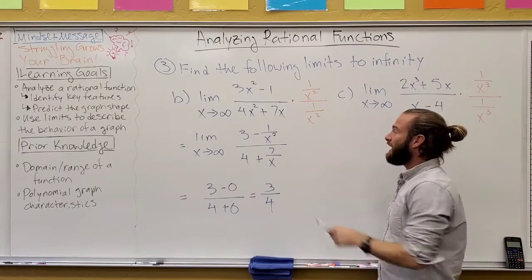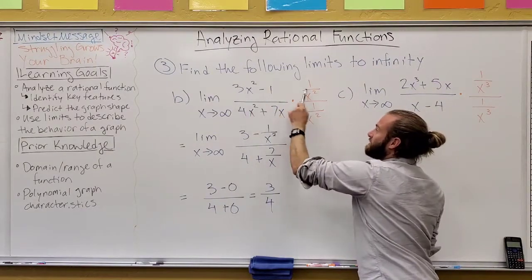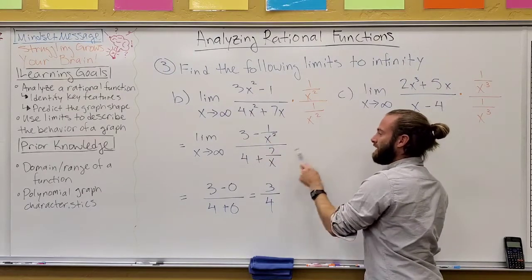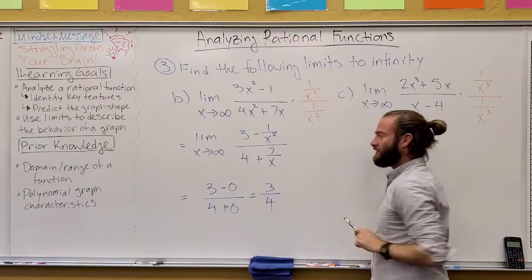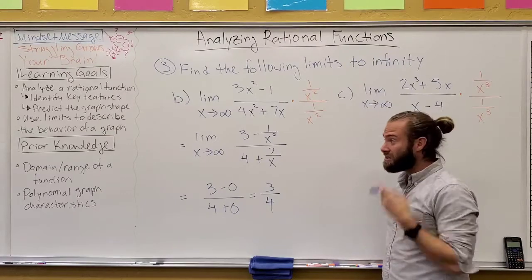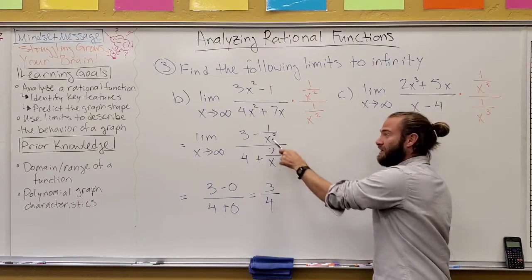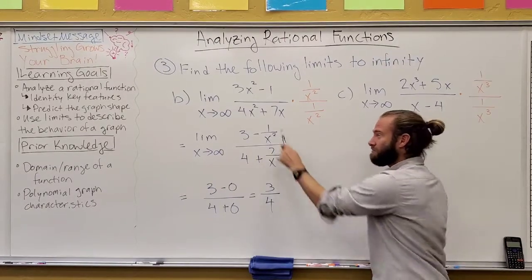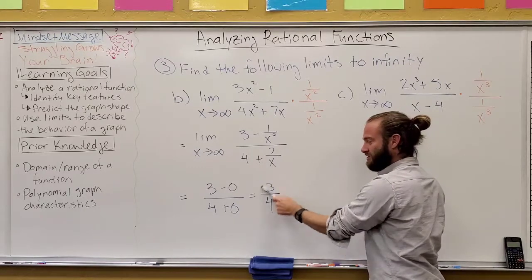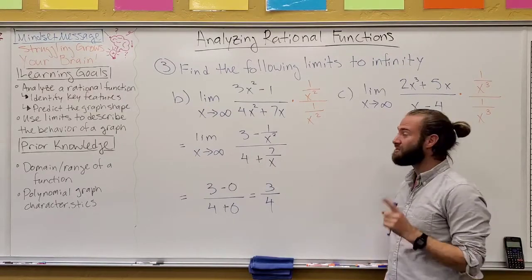we use the same multiplier as the last one because the highest power is, again, squared. And when I distribute this in, those cancel out, and we get this on top, and then these simplify a bit too, and we get that on bottom. And then we can directly think about infinity because the x's are all on the bottom. So this goes to zero and that goes to zero. In the end, our limit happens to be three over four.